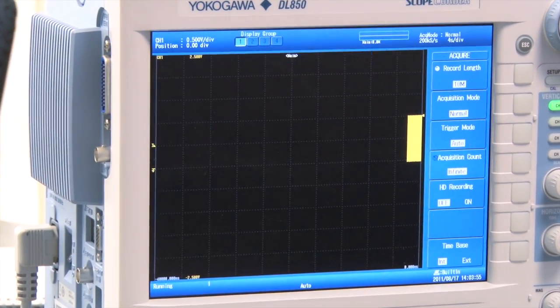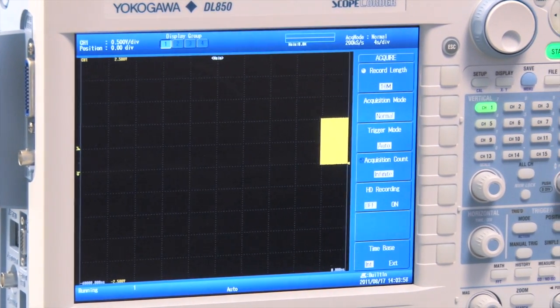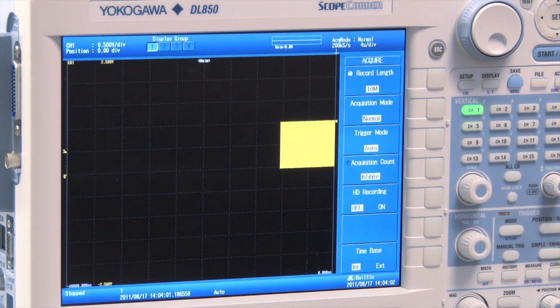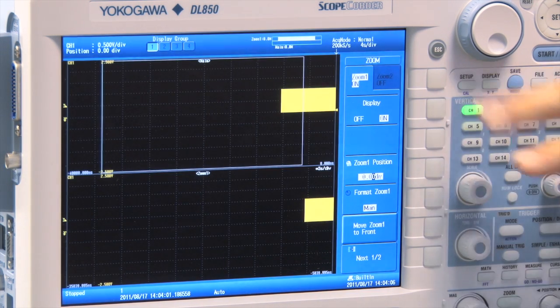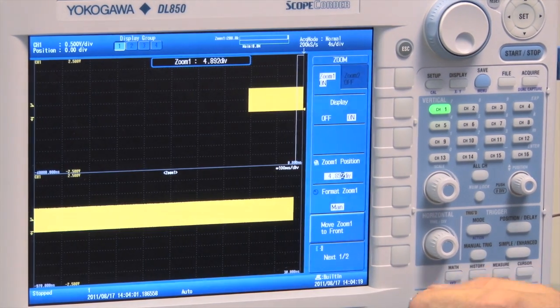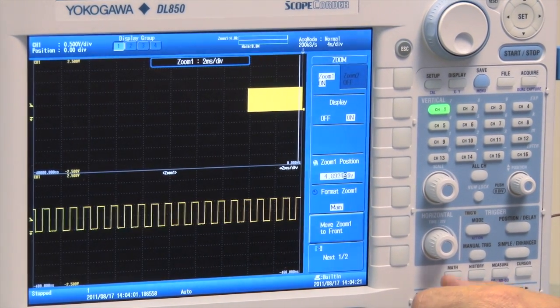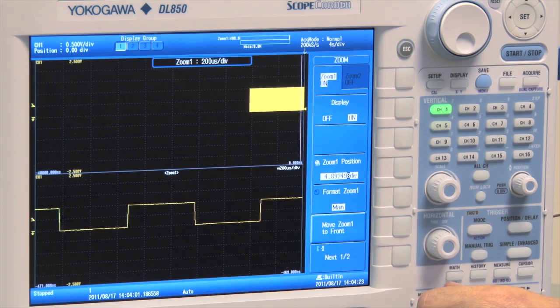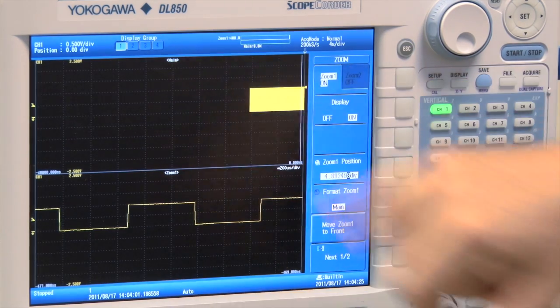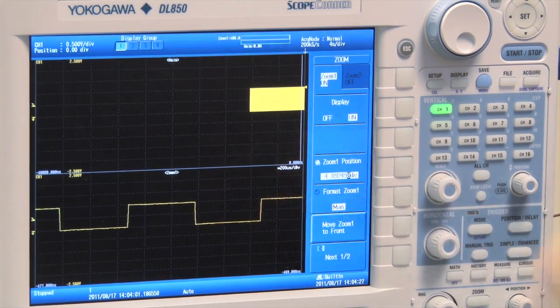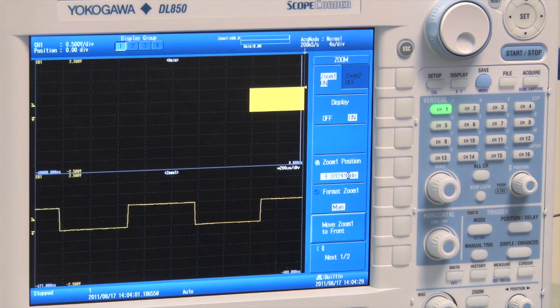So right now we're at four seconds per division. Now if I stop that and want to look at any information in that, we do have zoom windows. A nice feature about the instrument itself is with all the information it takes, it can really resolve down to a fine point. So up here we're on four seconds per division, down here we're on 200 microseconds per division.